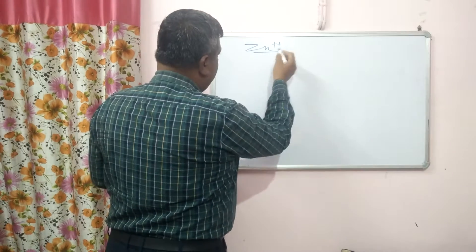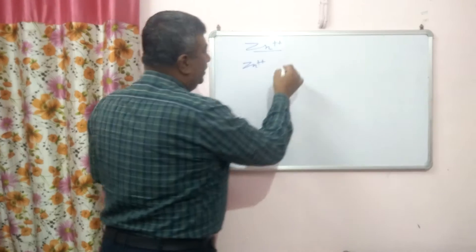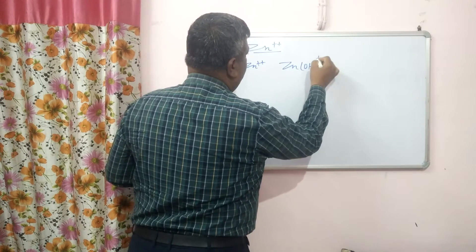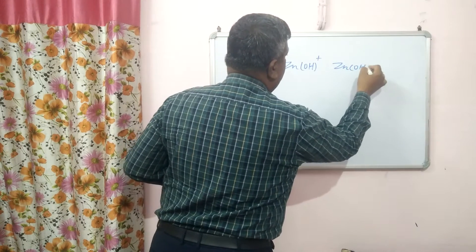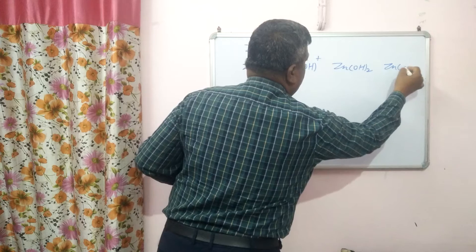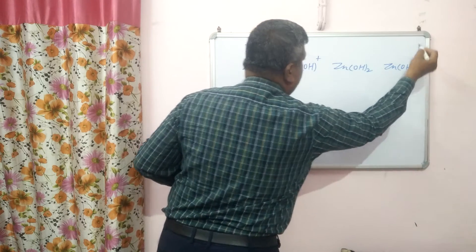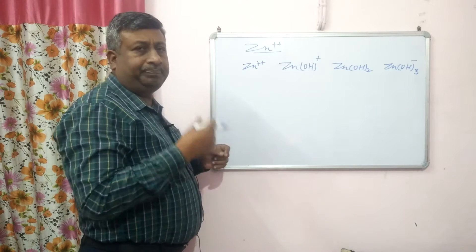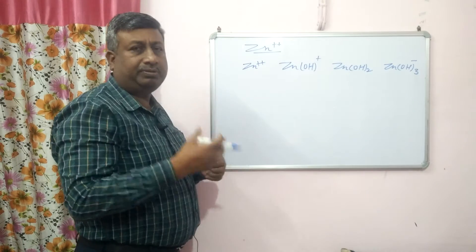The major species is Zn²⁺. Other hydrolytic species include ZnOH⁺, and as the hydroxide content increases, it forms Zn(OH)₂ and then Zn(OH)₃⁻, which is the anionic form. So zinc is present in soil in many forms, and these hydrolytic species are hydroxides.